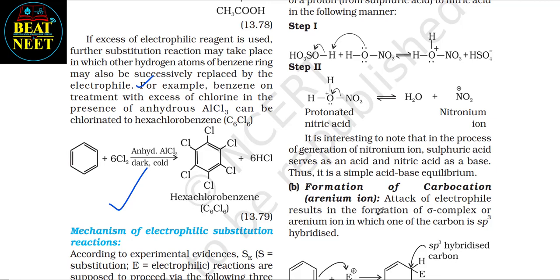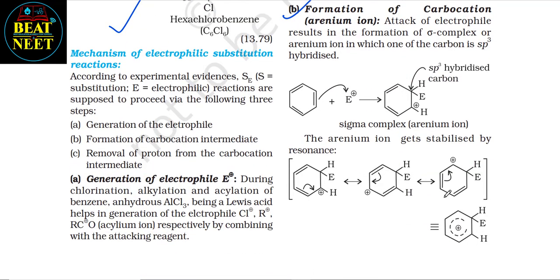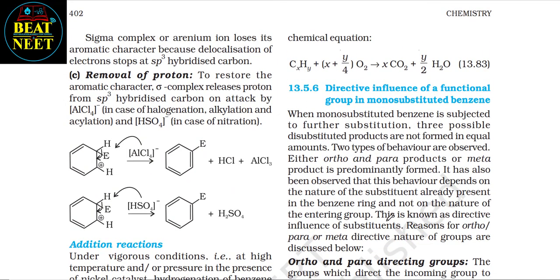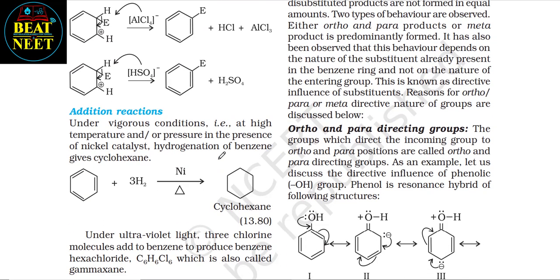In the process of generating the nitronium ion, sulfuric acid serves as an acid and nitric acid as a base — a simple acid-base equilibrium. (b) Formation of carbocation (arenium ion): attack of the electrophile results in formation of a sigma complex or arenium ion in which one carbon is sp³-hybridized. The arenium ion is stabilized by resonance but loses its aromatic character because delocalization of electrons stops at the sp³-hybridized carbon. (c) Removal of proton: to restore aromatic character, the sigma complex releases a proton from the sp³-hybridized carbon, attacked by AlCl₄⁻ in halogenation/alkylation/acylation and by HSO₄⁻ in nitration.